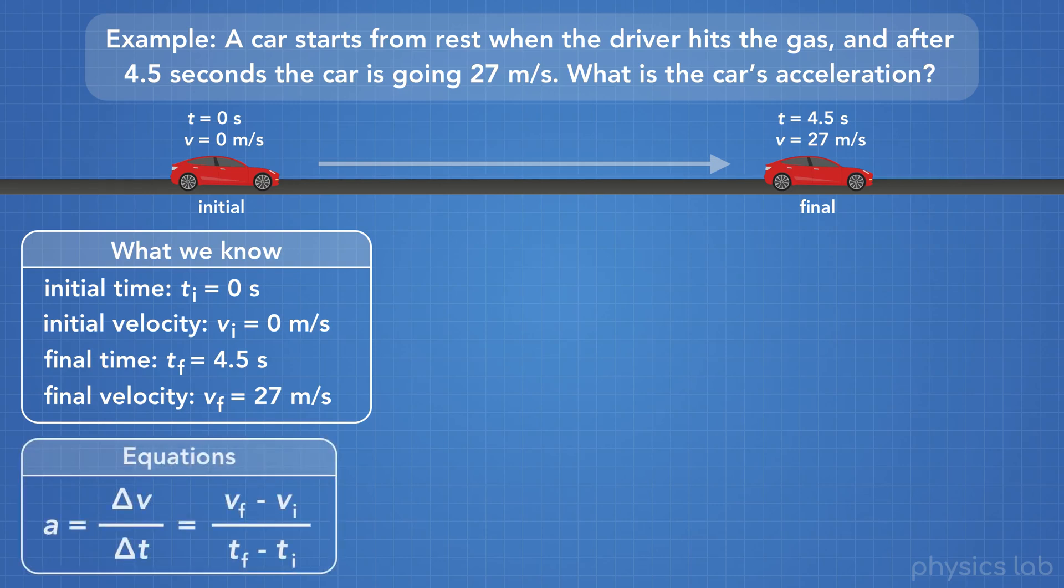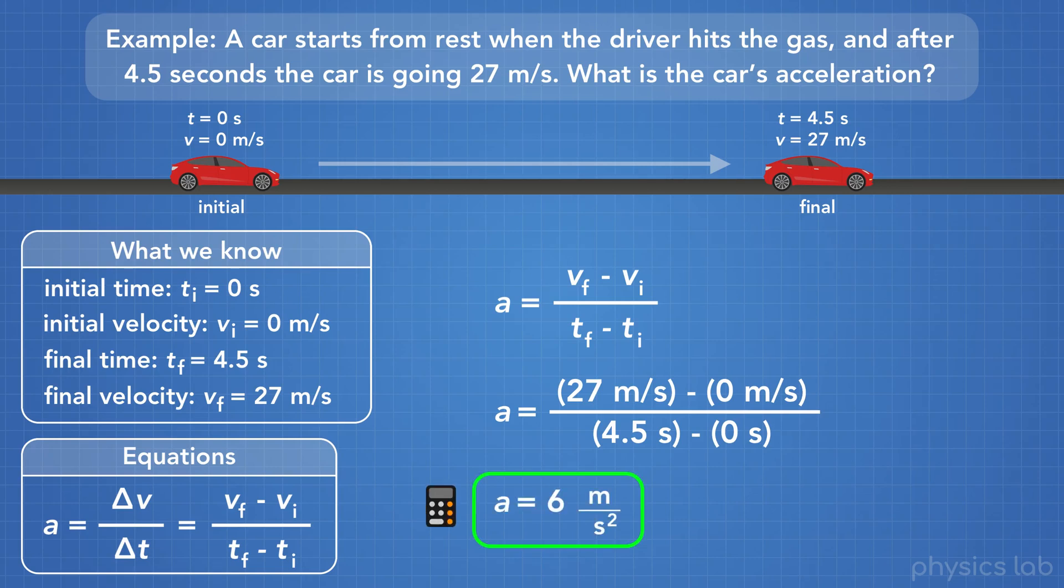After that, we write the equations that we might use for this problem. And here, we're looking at our equation for acceleration. Since we have an initial and a final velocity, let's use the right part of this equation. Next we'll plug in the variables that we know. The final velocity is 27 meters per second, and the initial velocity is zero meters per second. The final time is 4.5 seconds, and the initial time is zero seconds. If we plug that into our calculator, we find that the acceleration of the car is 6 meters per second squared.